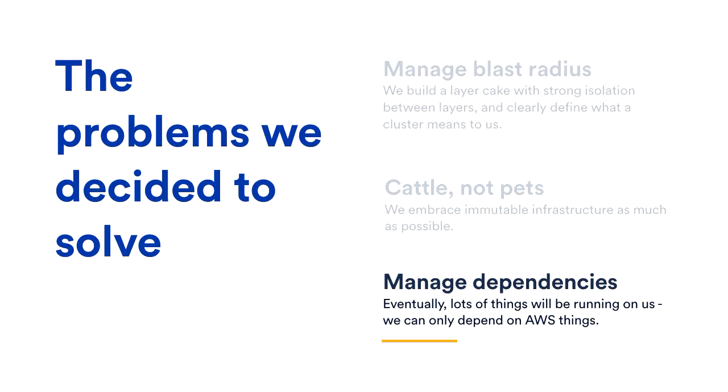Lastly, because we were going to have everything running on the cluster as much as possible, we really need to be careful about our dependencies. If you are planning on going to this cloud-native sort of thing, you've got to be really careful, because everyone wants to sell you stuff that's going to run on Kubernetes. But if your platform depends on the stuff that's running on it, then you are in for a bad time if it ever goes down. So the rule I came up with was: we'll only depend on AWS primitives, since we're running on AWS.